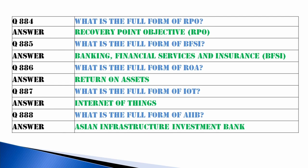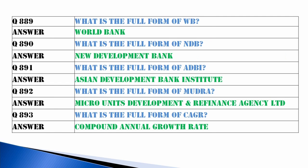What is ROA? Return on Assets. What is IoT? Internet of Things. What is AIIB? Asian Infrastructure Investment Bank. What is WB? World Bank. What is NDB? New Development Bank. What is ADBI? Asian Development Bank Institute. What is MUDRA? Micro Units Development and Refinance Agency Limited.